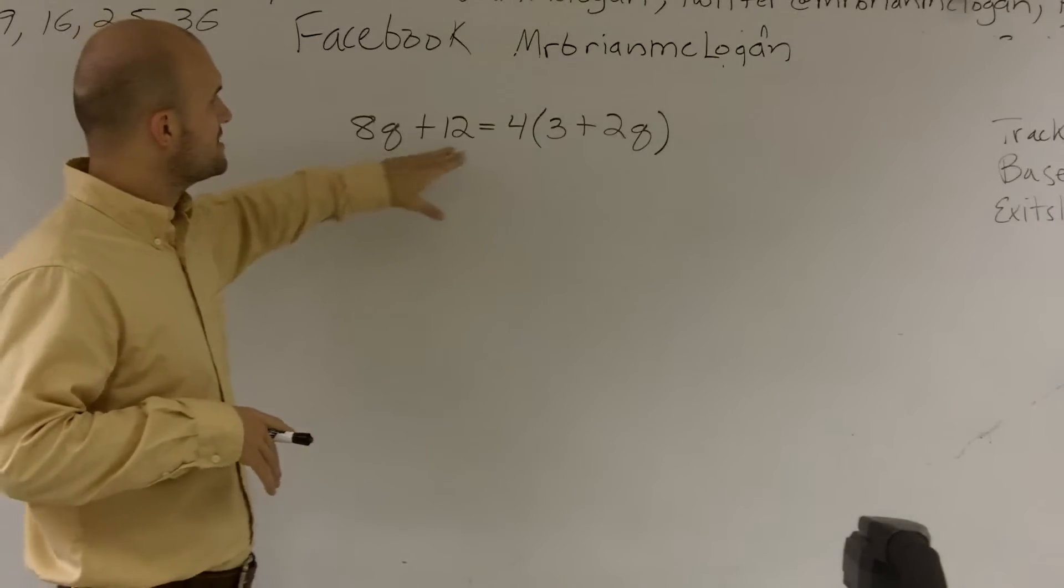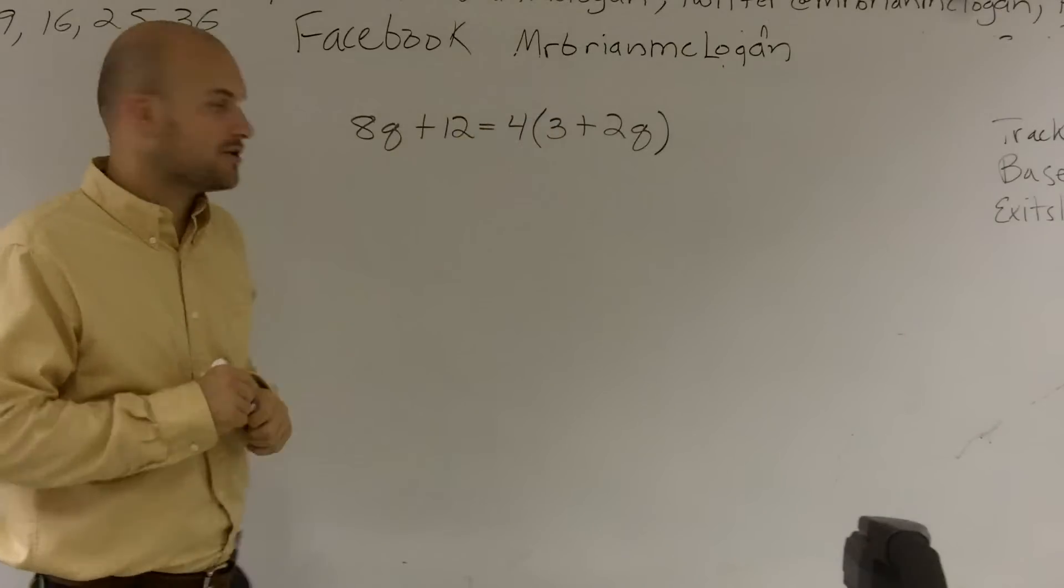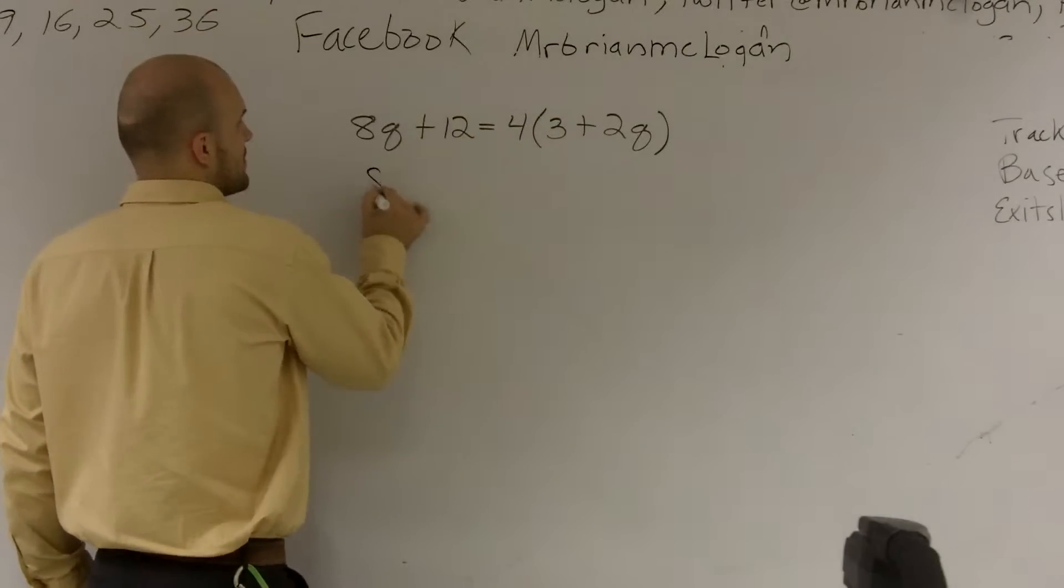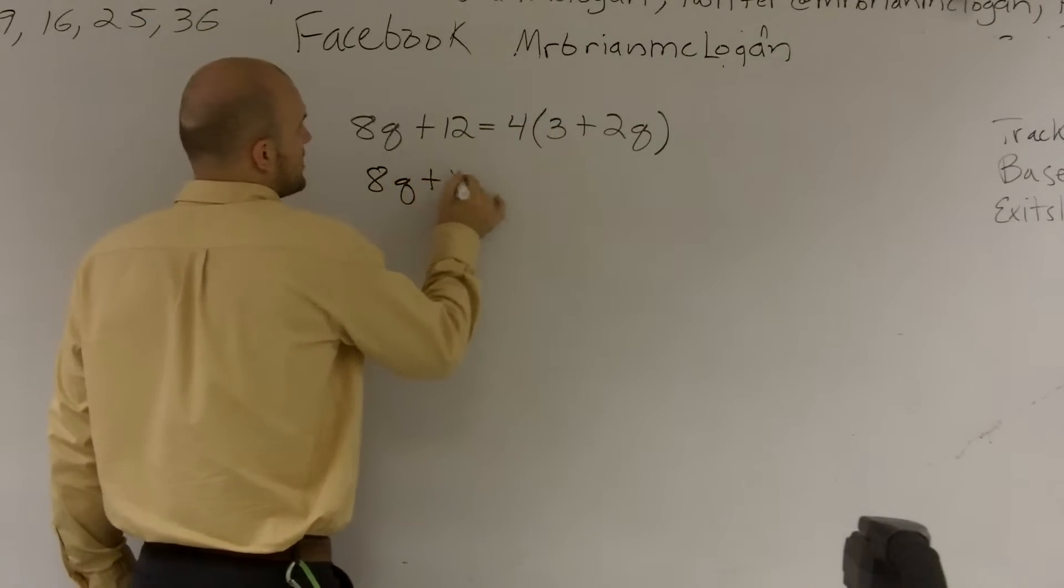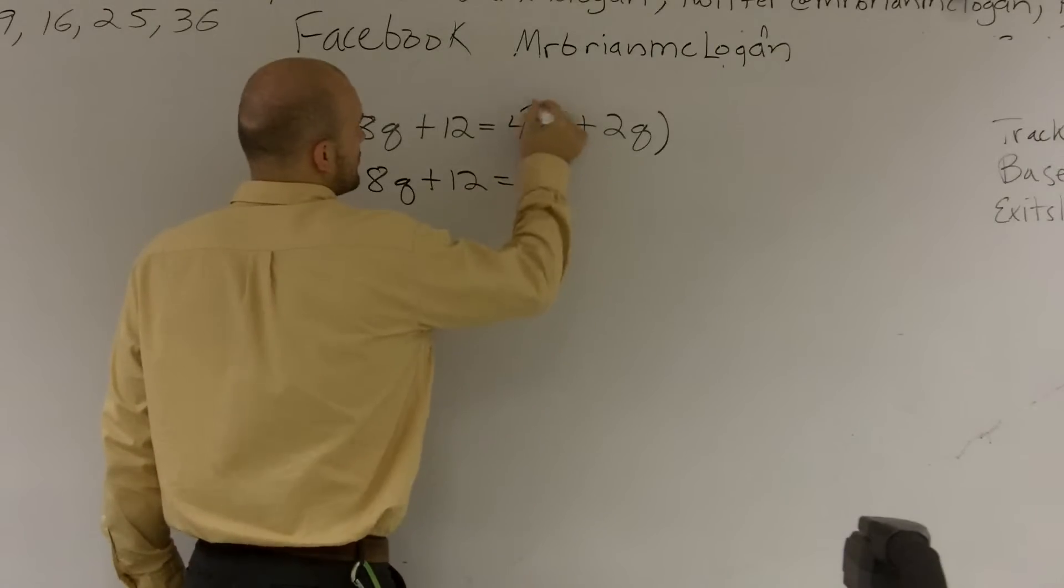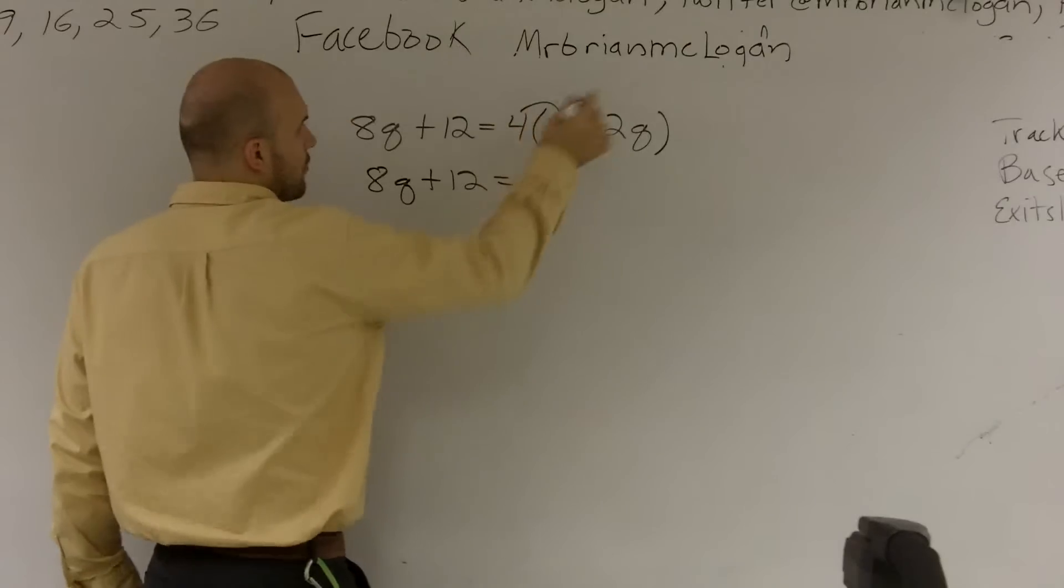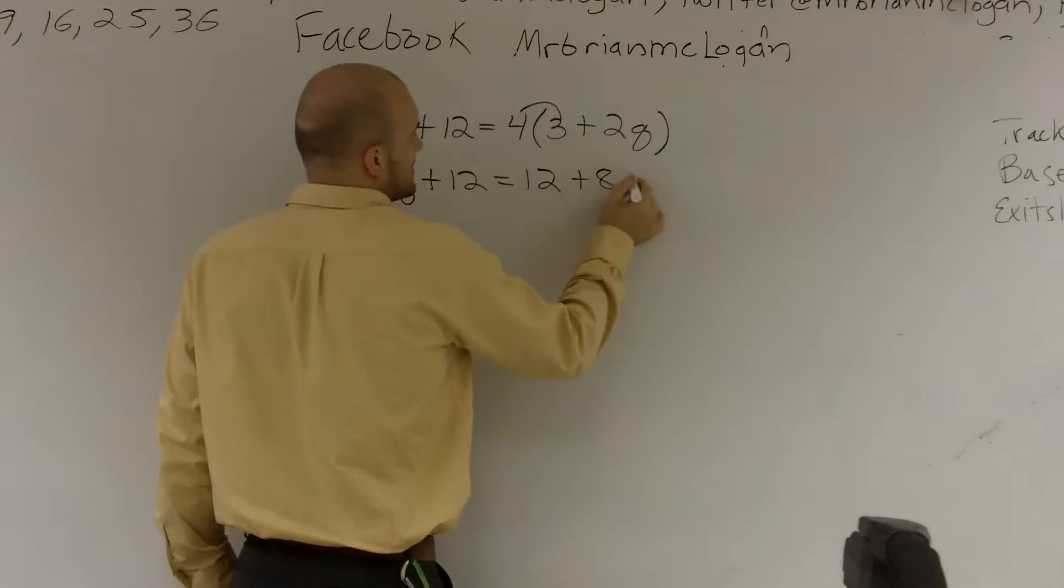So what I notice I can do is I can use my distributive property to simplify the right side. So I get 8q plus 12 equals 4 times 3 is 12, and 4 times 2q is going to give me 8q.